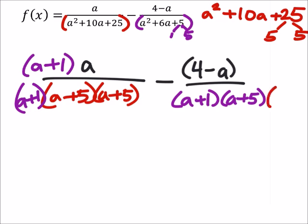In the purple, that one is missing a second a plus 5. And even though it duplicates, we do need to see that it happens twice there. So we need to multiply the numerator also by a plus 5.